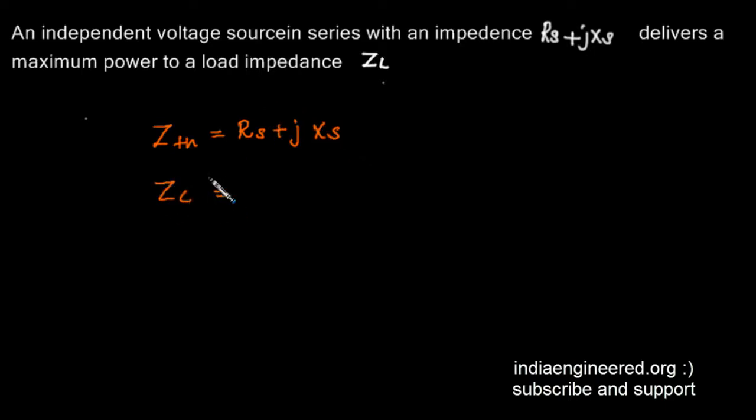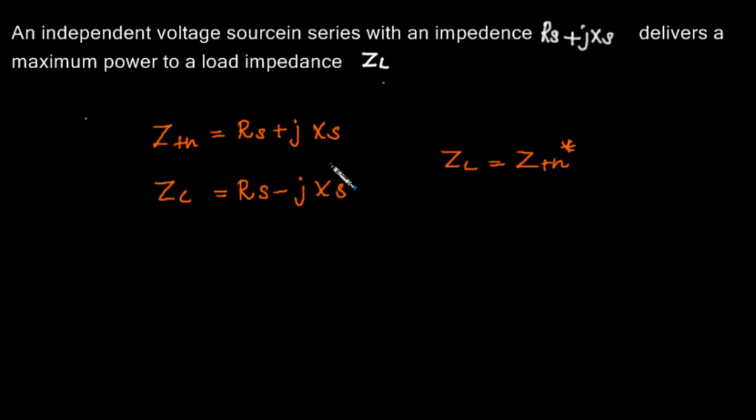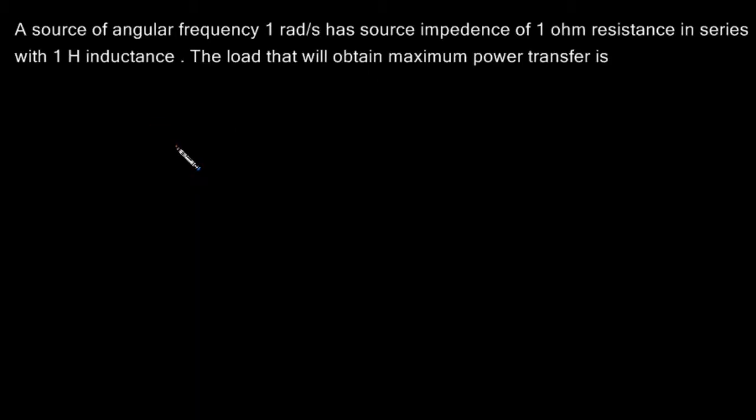We have discussed the cases - ZL should be the conjugate of ZTH, that means it should be RS minus jXS. It was a simple straightforward question. Please go through the previous video to understand the different conditions. Thank you.